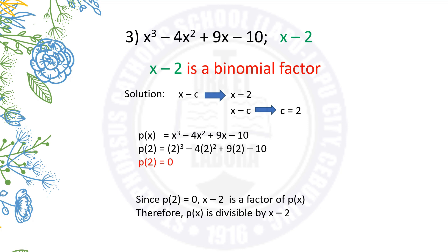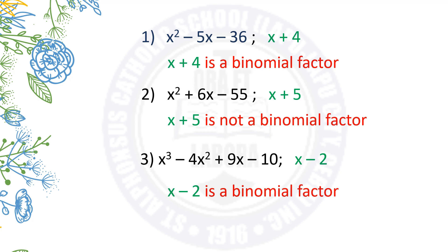Therefore, p of x is divisible by x minus 2 and is considered a binomial factor. The previous activity allows us to identify whether a binomial completely divides a polynomial or not. This can be done using either synthetic division or the remainder theorem, with the goal of obtaining a remainder of 0. Whenever this happens, the binomial divisor is a factor of the polynomial.